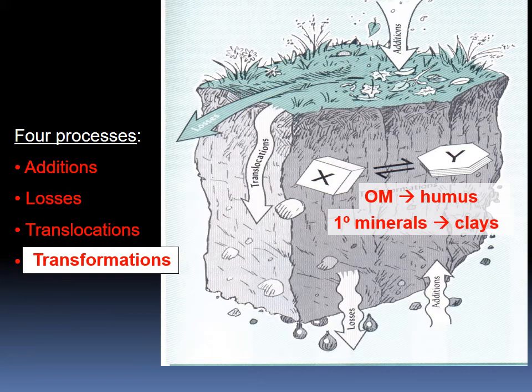Transformation is the process of converting something from one form into another. When water reacts with minerals, some minerals dissolve and react with others to create a new type of mineral. Organic materials are also transformed — when plant material is decomposed into organic matter, it is transformed from a solid form into a very fine material. So transformation describes the conversion from one form into another.